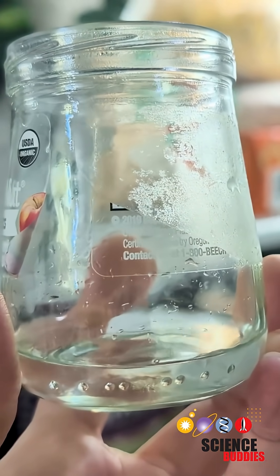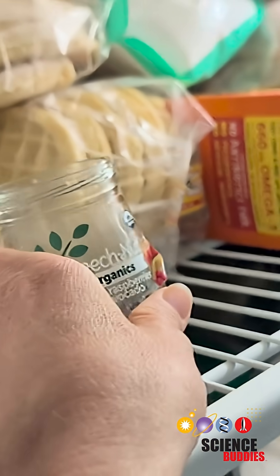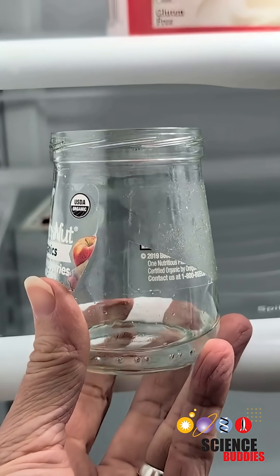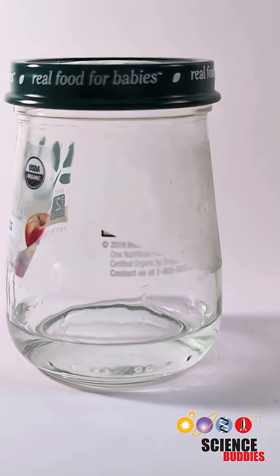So take one of your samples in the glass jar with no lid and put it in the freezer. Take one of your jars with a water sample and put it in the refrigerator. For one of the jars go ahead and leave it at room temperature.